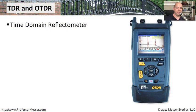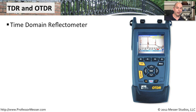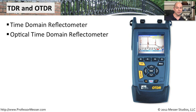When you need to do some detailed troubleshooting of copper and fiber connections, you're going to need some very specialized tools. For copper cables, you want to use something like a time domain reflectometer, or TDR. For fiber connections, you would use an optical time domain reflectometer, or an OTDR.